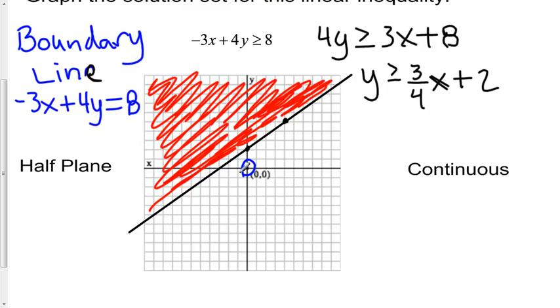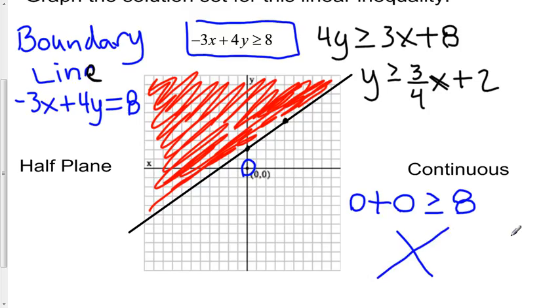In two, we're going to say, well, no, that shouldn't be a solution because it should be above this line. Well, let's just test it anyway. If I plug in zero, zero to my original inequality here, what am I going to get? I'm going to get zero plus zero greater than or equal to eight. And is this true? No, this is not true. Zero is not greater than or equal to eight. Which means that zero, zero is not a solution. This point right here is not a solution.